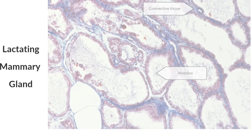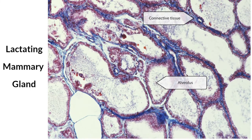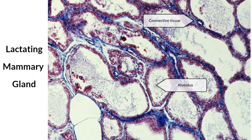During pregnancy, the cells of the mammary glands become larger and alveoli develop in preparation for milk production. The alveoli are clusters of milk-secreting cuboidal cells that are surrounded by myoepithelial cells.